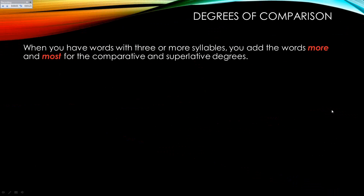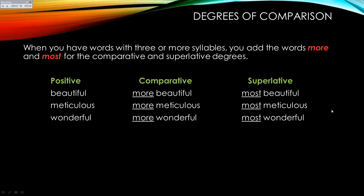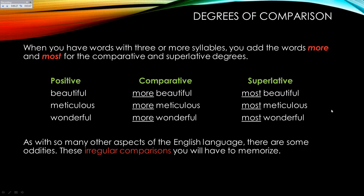When you have words with three or more syllables, you have to add the word more or most — and that's for the comparative and the superlative degree. So if I have the word beautiful, I would say more beautiful and most beautiful. I can't say 'beautiful-er' or 'beautiful-est.' If it was meticulous, I can't say 'meticulous-er' — that's weird. More meticulous, most meticulous.